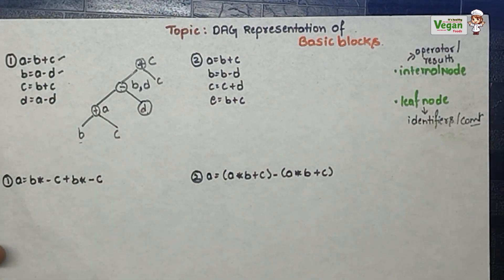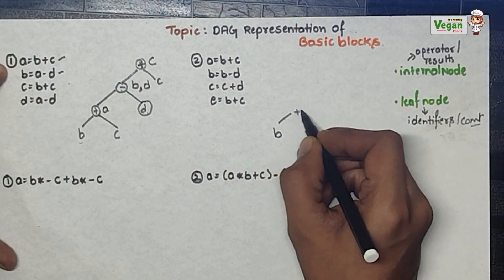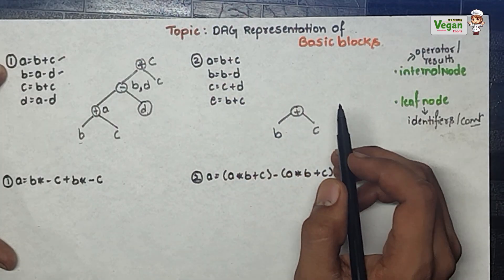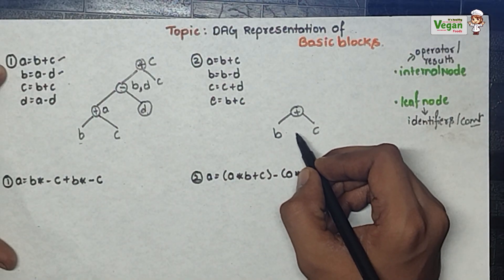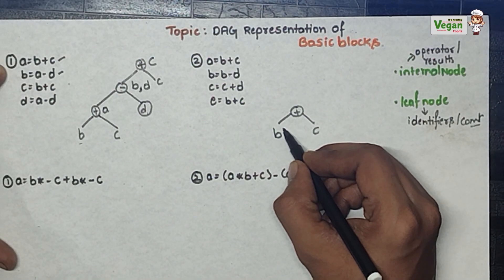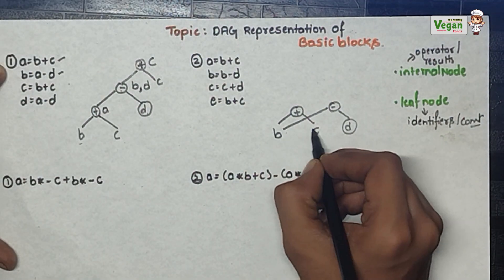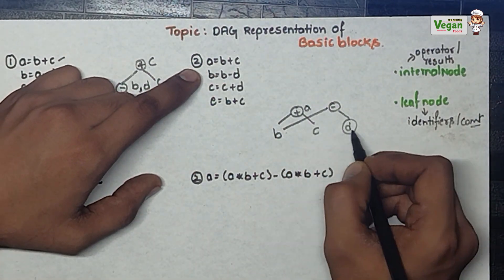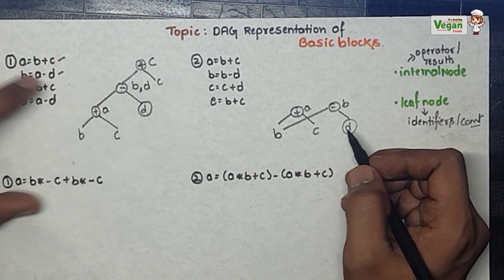Now let's go with the second question. A is equal to B plus C — B is here plus C. Next, B is equal to B minus D. B minus D result is B. B plus C result was A and B minus D result is B.